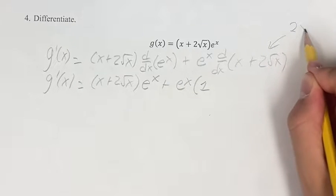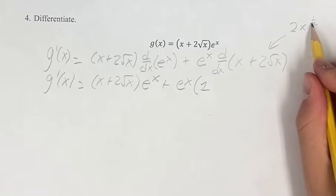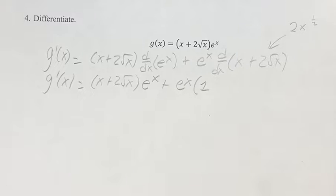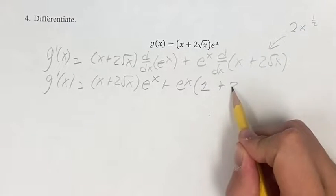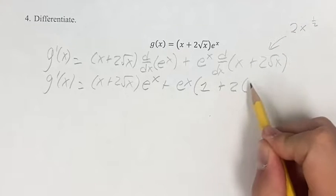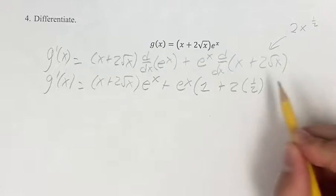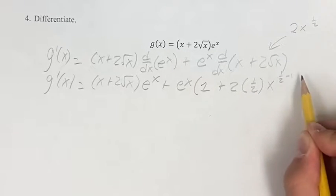For this term, we can think of it as 2 times x to the 1 half, since x to the 1 half is root x. That's going to allow us to treat this like a power function. So you take the coefficient, bring it up front, bring down the exponent, 1 half, and subtract 1 for your new exponent.